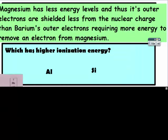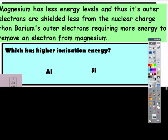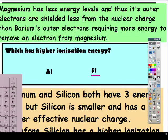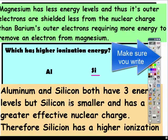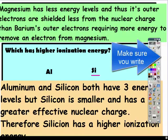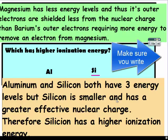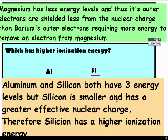Your answer should have been silicon. Aluminum and silicon both have three energy levels, but silicon is smaller and has a greater effective nuclear charge. Therefore, silicon has a higher ionization energy.